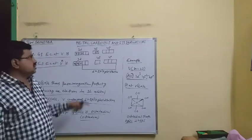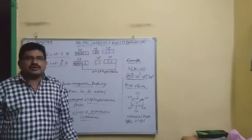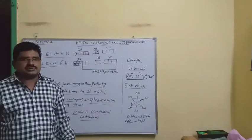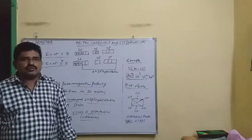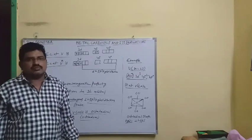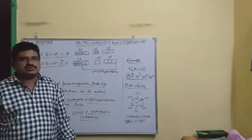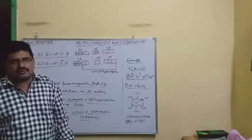In this chapter on metal carbonyls and its derivatives, we have discussed the structure and shapes. In the next class, we will discuss the EAN rule — the Effective Atomic Number rule — with examples. Thank you for watching.